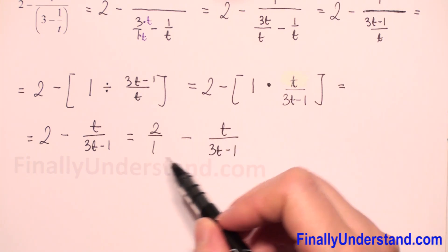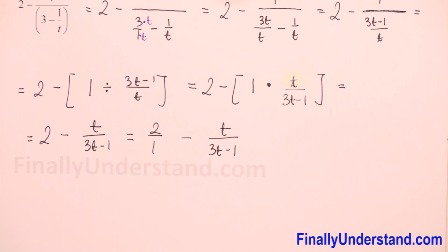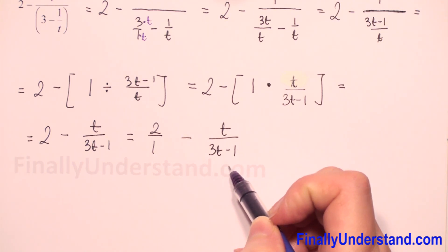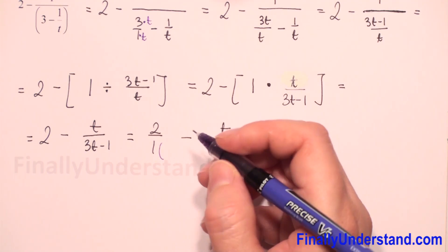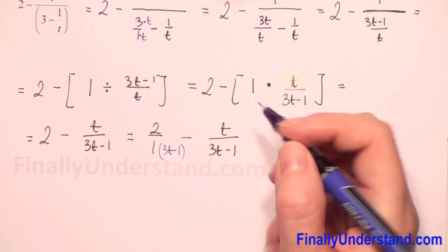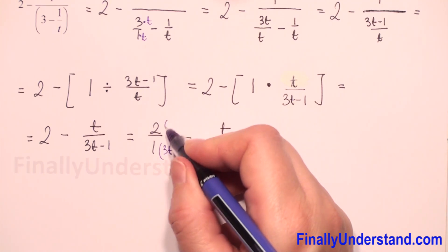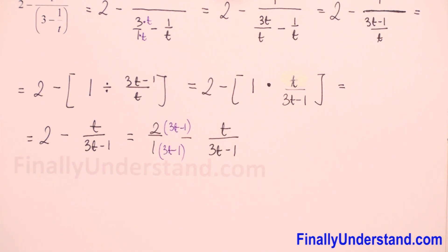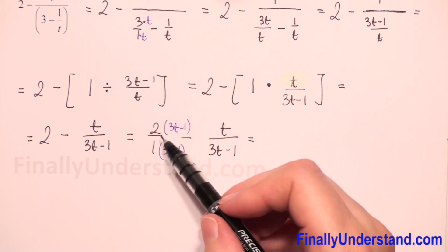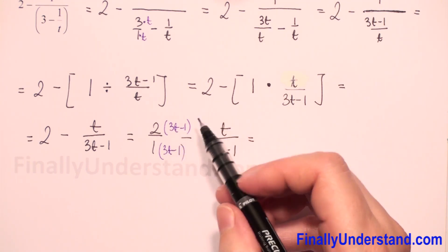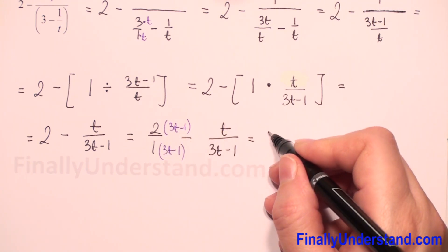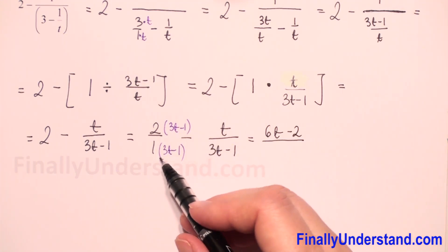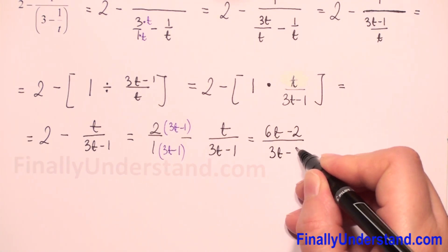Next step: when we have subtraction of fractions we need the same denominator. We have 1 and 3t minus 1, so the common denominator will be 3t minus 1. I need to multiply this one by 3t minus 1. Whatever I did with the denominator, I have to do the same with the numerator. So we multiply 2 times the whole expression in parentheses: 2 times 3t is 6t, 2 times negative 1 is negative 2, over 1 times 3t minus 1 is 3t minus 1.